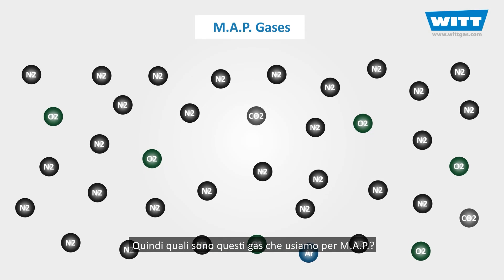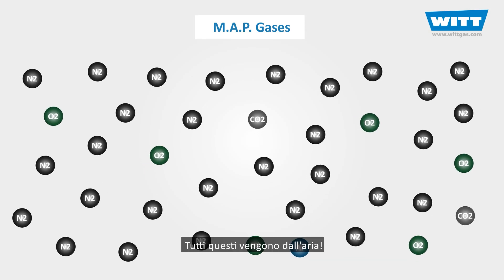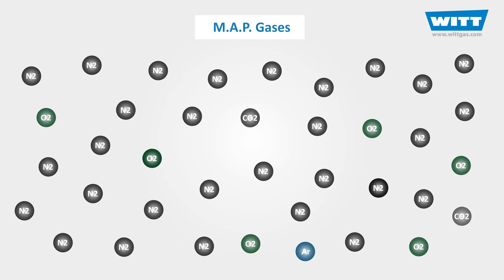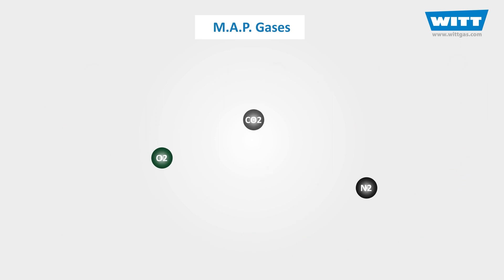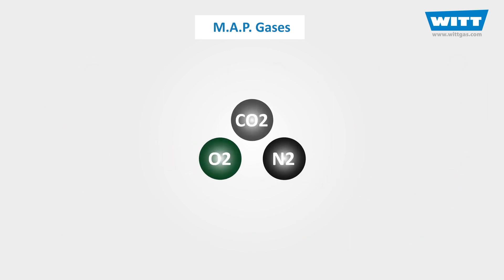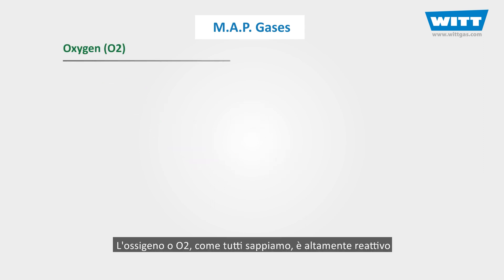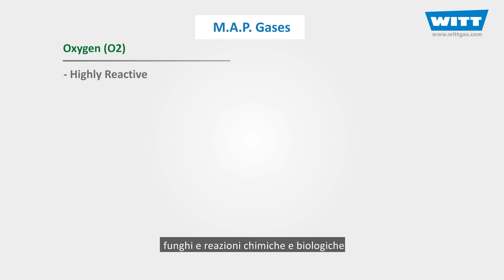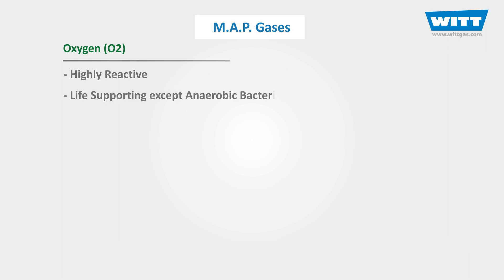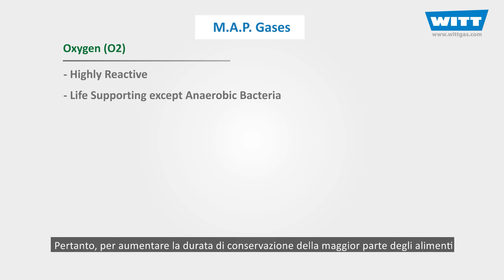So, what are the gases used for MAP? All of these come from the air. The first one is oxygen, or O2. Oxygen is highly reactive and most common spoilage bacteria, fungi, and chemical and biological reactions require oxygen to live and grow. Therefore, to increase the shelf life of most foods, the pack atmosphere should contain a low concentration of oxygen.